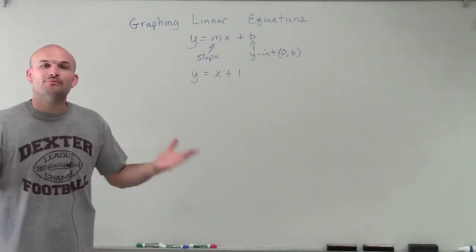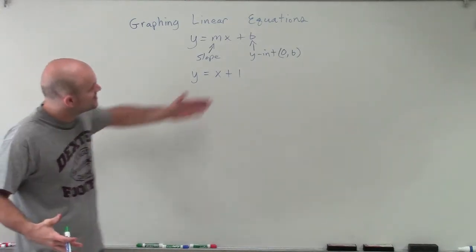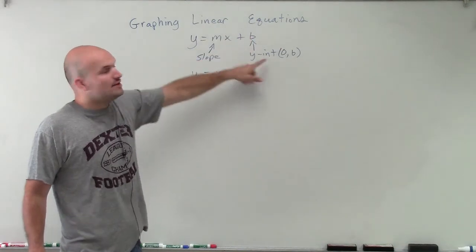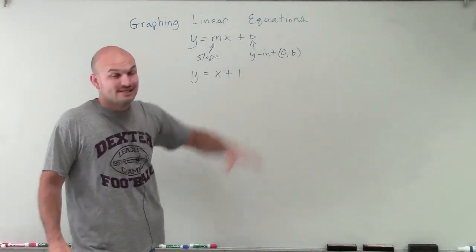We know that the slope is going to be the number that's going to be multiplied by x, and our y-intercept is b, which we can write as a point of 0, comma b.